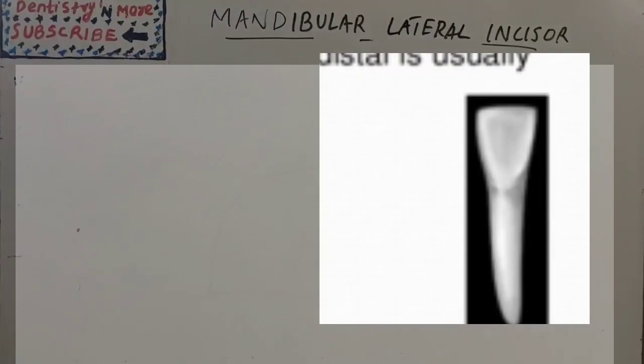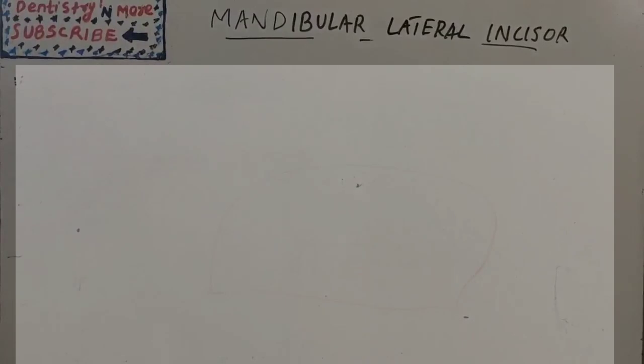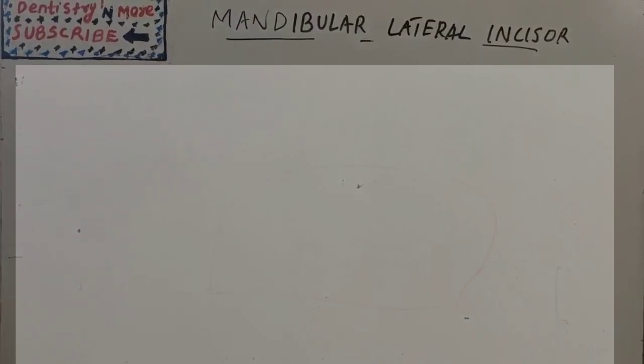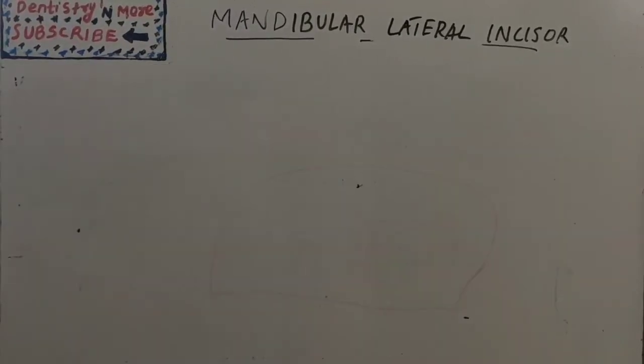Anomalies are rare, but occasionally a bifurcated root is found with respect to the mandibular lateral incisor. So the difference between mandibular central and lateral incisor we already discussed with the mandibular central incisor. So next we have mandibular premolars because we finished already the mandibular canine session. I'll come up with mandibular premolars. Thank you.